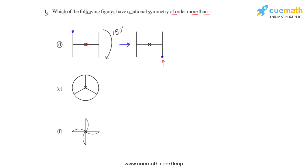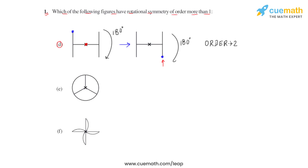Rotating this figure again by 180 degrees clockwise, we get back to the original question figure. Since we rotated the figure twice to return to the original, this figure has an order of rotation of 2, which is more than one according to this question.